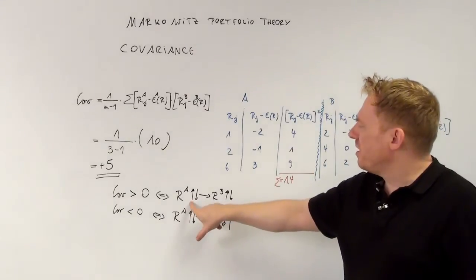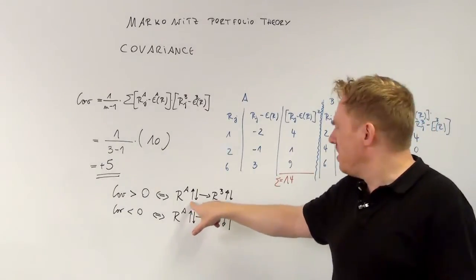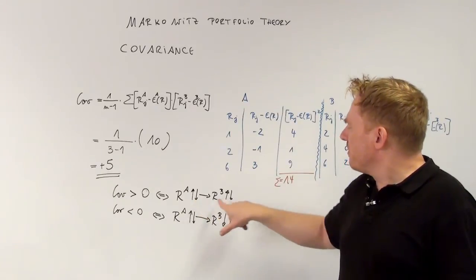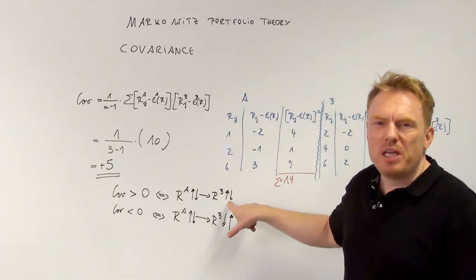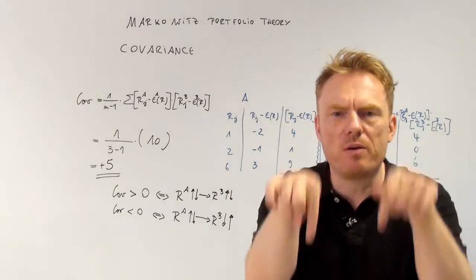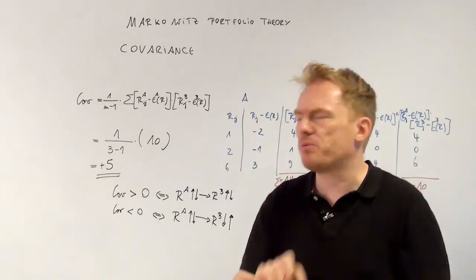Which means if share A rises, so does share B. If share A gets down, so does share B. So they move into the same direction, this way or this way.